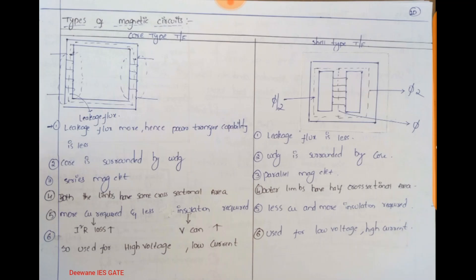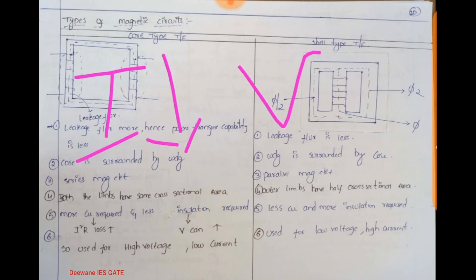Insulation level is directly proportional to voltage. If voltage rating increases, we must increase insulation level. Since insulation required in core type transformer is less, we can use it for high voltage rating. But copper requirement is more — if more copper is used, I-squared-R losses increase. So core type winding is used for low current and high voltage applications.